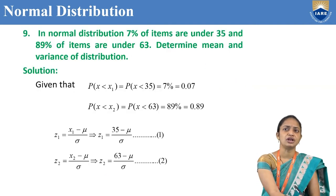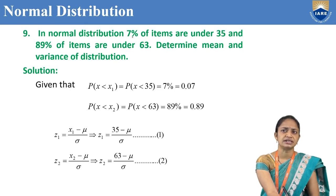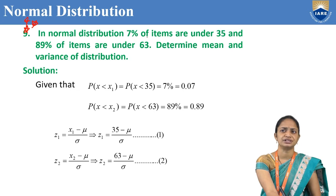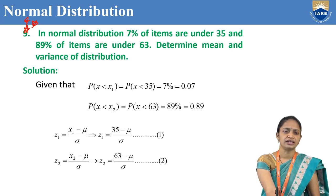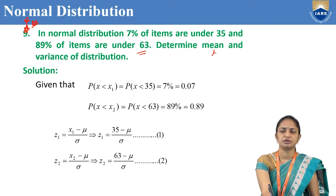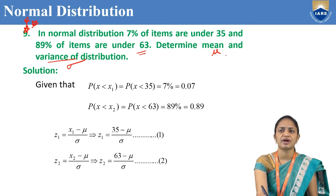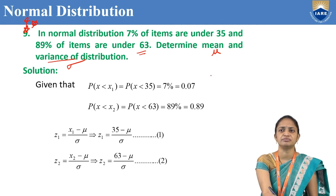Next is a very important problem. In a normal distribution, 7% of items are under 35 and 89% of items are under 63. Determine the mean and variance of the distribution. This is opposite to previous problems: previously we were given μ and σ to find areas; here we are given the areas and need to find μ and σ.